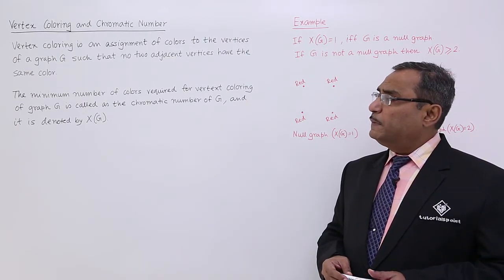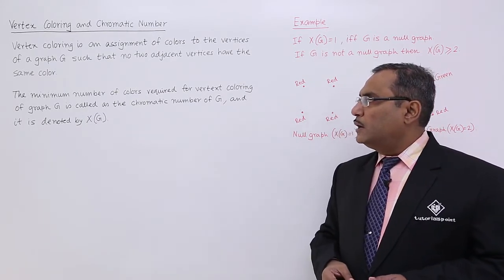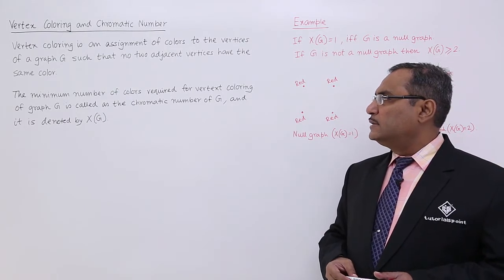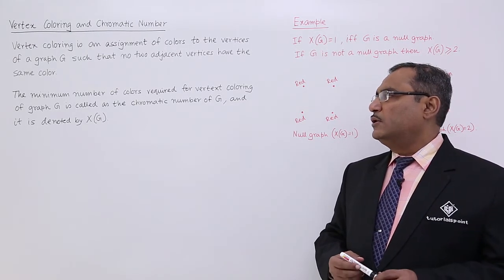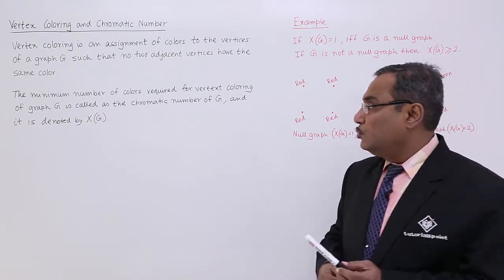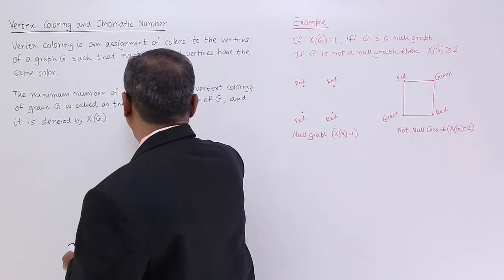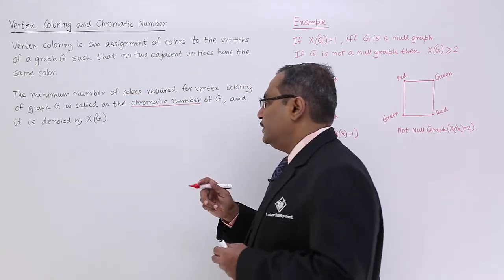This particular graph coloring can also be called as vertex coloring. The minimum number of colors required for vertex coloring of graph G is called as the chromatic number of G. That is known as the chromatic number.